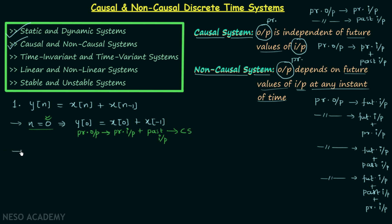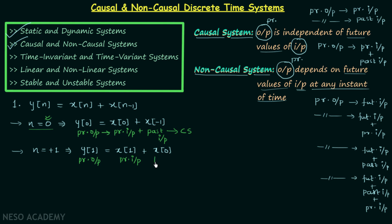We will also check for another value of n. Taking n = +1 and substituting gives y[1] = x[1] + x[0]. Using the same analysis, y[1] is the present output, x[1] is the present input, and x[0] is the past input. So again the present output is depending on the present input and the past input, with no future input involved — confirming the nature of a causal system.